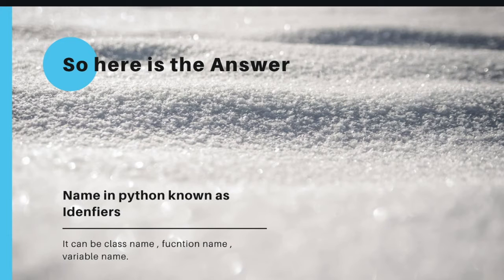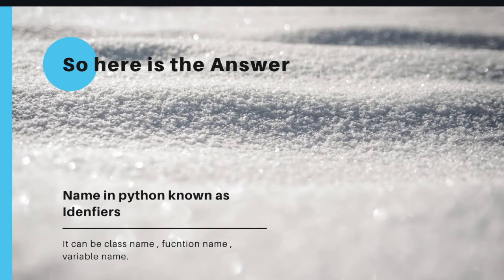Now there are some rules and regulations to define an identifier, just like a name has rules. For example, my first name is Rajat and the last name is Upadhyay — I can't reverse them. I also can't use a digit inside my real name. Similarly, when defining any identifier in Python, there are five rules, which we will see with examples.